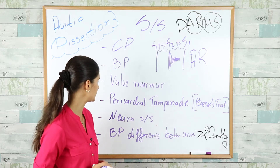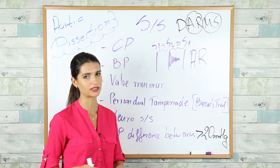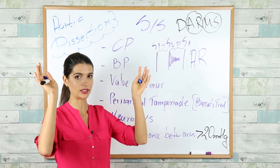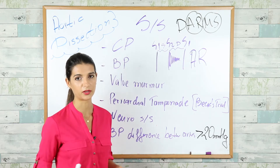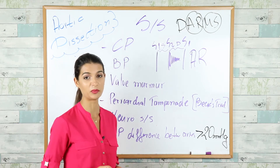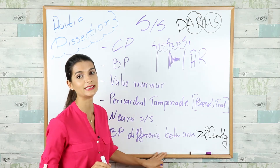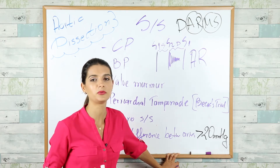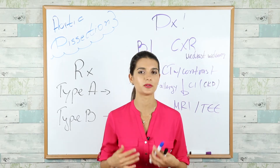If the aortic arc is involved, you'll see neurological symptoms like stroke symptoms, because the arc of the aorta has branches supplying the head and brain with blood. Very importantly, in aortic dissection you'll also see a blood pressure difference between the arms — this difference must be more than 20 mmHg to raise suspicion of aortic dissection.